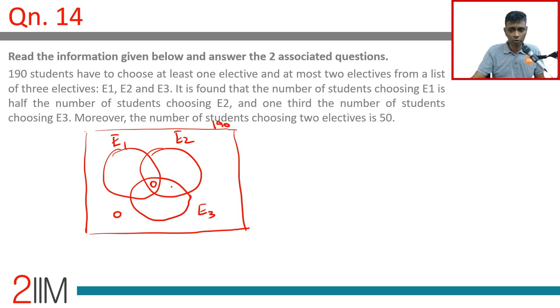It is found that the number of students choosing E1 is half the number choosing E2 and one third the number choosing E3. This is x, this is 2x, this is 3x. Moreover, the number of students choosing two electives is 50, so we have p, q, r where p plus q plus r equals 50.